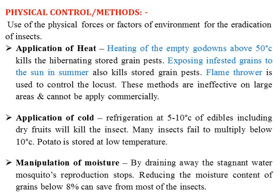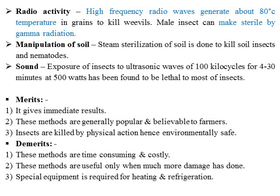Application of cold: refrigeration at 5 to 10 degrees Celsius for edible and dry foods kills insects, as many insects fail to multiply below 10 degrees Celsius. Potato is also preferred to be stored under low temperature. Manipulation of moisture — draining away stagnant water in the field reduces mosquito reproduction. Reducing the moisture content of grains below 8 percent saves them from most insects; during storage, moisture should be maintained at 8 percent. Radioactivity — high-frequency radio waves generating up to 80 degrees Celsius in grains can kill weevils, and many insects can be killed with gamma radiation. Steam sterilization of soil can kill soil-borne insects and nematodes. Sound waves produced with ultrasonic waves at 100 kilocycles for 44 to 30 minutes have been found lethal to most insects.